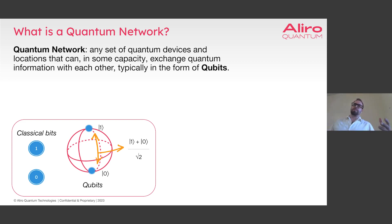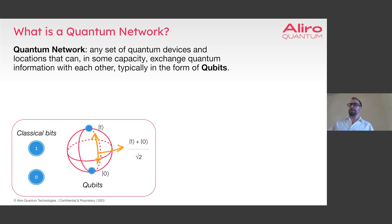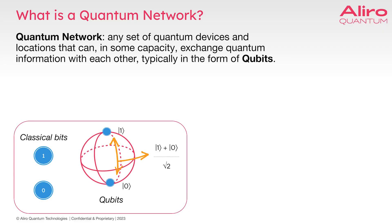Typically this quantum information is in the form of qubits, which are the quantum equivalent of a classical bit. A qubit, rather than being just a zero or just a one, can also be in a superposition of those states. In fact, it can be anywhere on the surface of a sphere, as shown here, where the poles are the one and zero state.